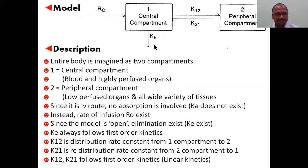K12 is the distribution rate constant from first compartment to second compartment. K21 is the redistribution rate constant from second compartment to first compartment. K12 and K21 always follow first order kinetics, that is linear kinetics.